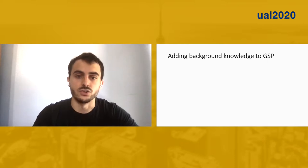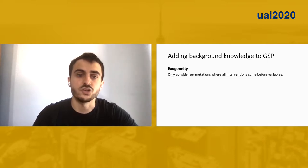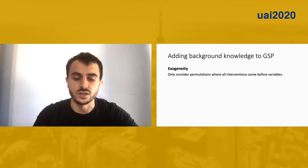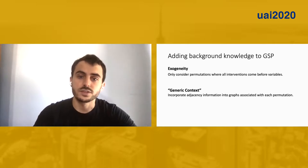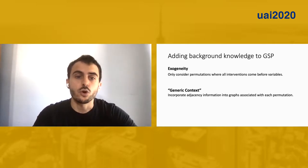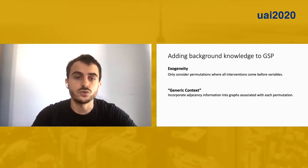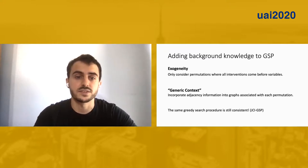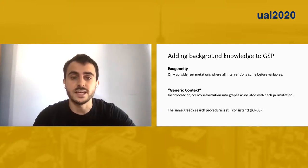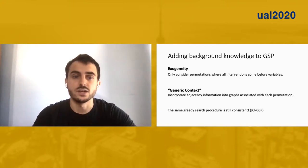To incorporate background knowledge into GSP, we restrict the search space to permutations obeying the exogeneity assumption and ensure that the minimal IMAP for each permutation has a clique on the intervention variables. Since we can incorporate any adjacency information into the algorithm, this allows us to incorporate any known targets of the interventions — for instance, the target gene of a knockout in gene knockout experiments. In our paper, we show that even with these modifications, a weakly decreasing path still exists, so we can use the same greedy search procedure. This gives rise to an algorithm called joint causal inference GSP, or JCI-GSP.